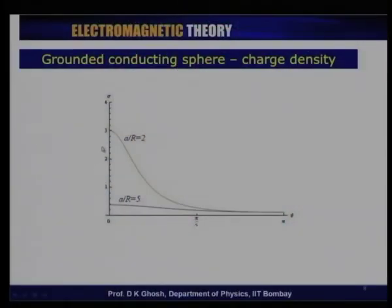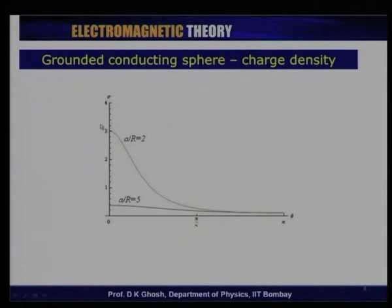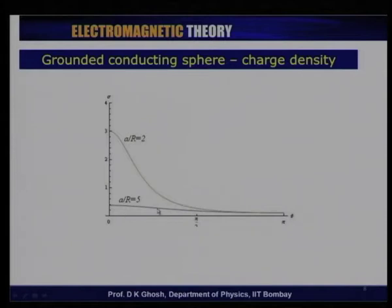I am drawing only the positive quadrant; the magnitude is drawn. As you go away from θ = 0, the charge density decreases. When the charge is farther away, the distribution spreads out more, because from a greater distance the point at θ = 0 and other angles are not so easily differentiated.